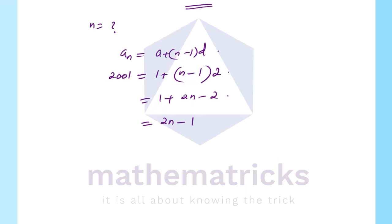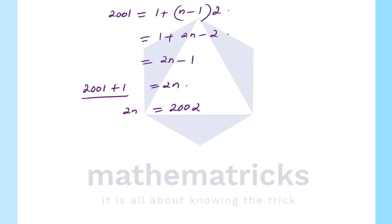Now, let's solve for n. Moving minus 1 to the left side: 2001 plus 1 equals 2n. That is, 2n equals 2001 plus 1 equals 2002. Dividing both sides, n equals 2002 divided by 2, which equals 1001.